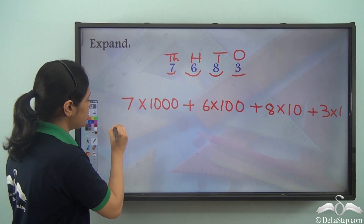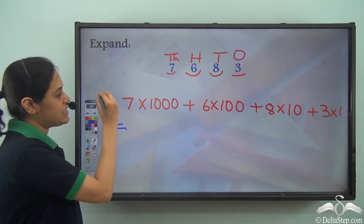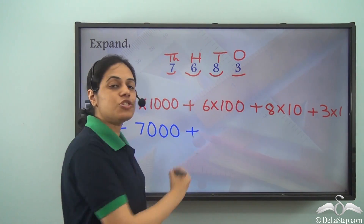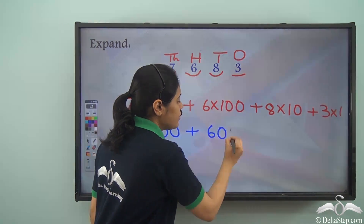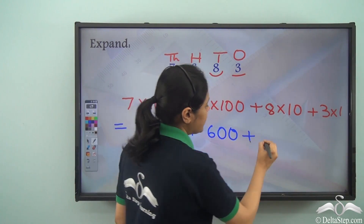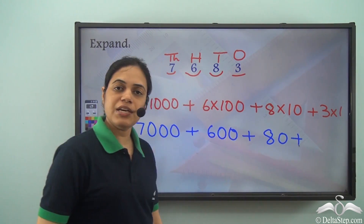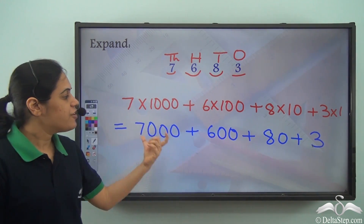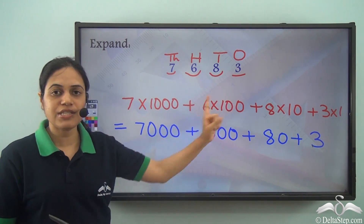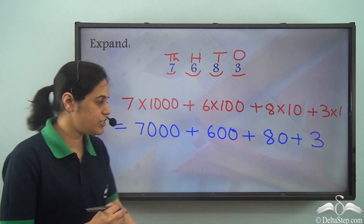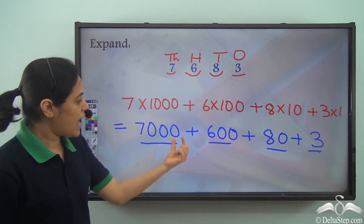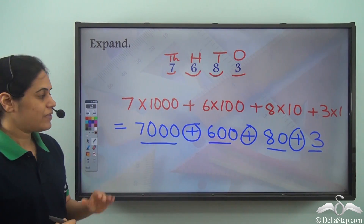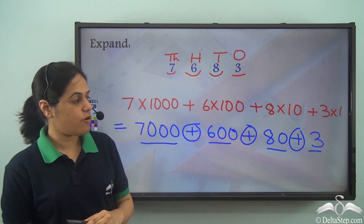So now, what are the place values? The place value of seven is seven into thousand — that is seven thousand. The place value of six is six into hundred — that is six hundred. The place value of eight is eight into ten — that is eighty. And the place value of three is three into one — that is three. So I have written the place values of all four digits and added them. This is the expanded form of this number.